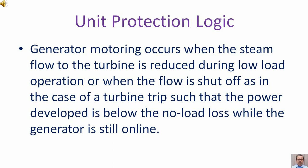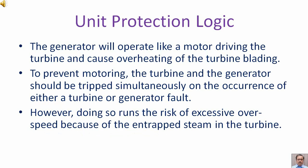Generator motoring occurs when the steam flow to the turbine is reduced during low load operation, or when the flow is shut off as in a turbine trip, such that the power developed is below the no-load loss while the generator is still online. The generator will then operate like a motor driving the turbine and cause overheating of the turbine blading. To prevent motoring, the turbine and generator should be tripped simultaneously on the occurrence of either a turbine or generator fault. However, doing so runs the risk of excessive overspeed because of the entrapped steam in the turbine.